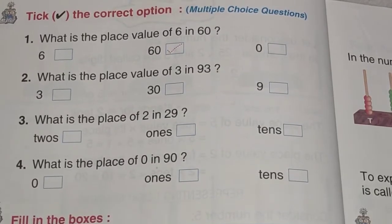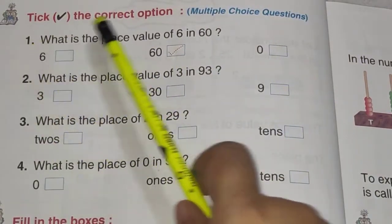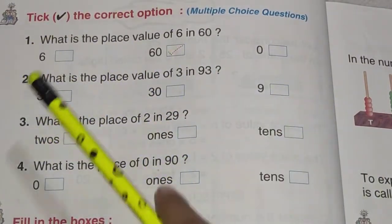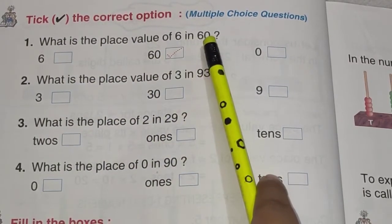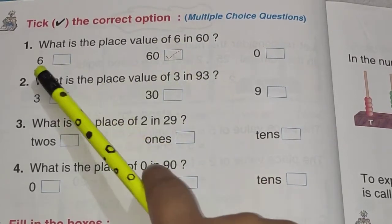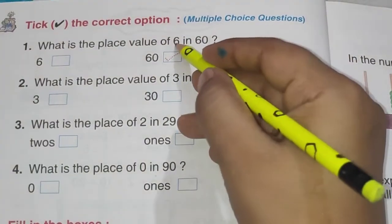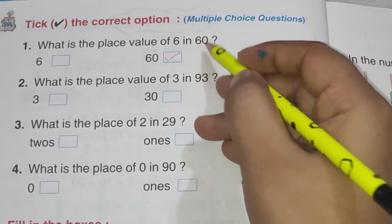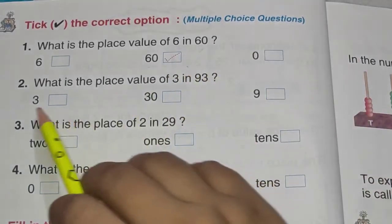Now let's do some questions based on place values. So this one is tick the correct option. Now first question is. What is the place value of 6 in 60? This is a number 60. Aur waha par 6 ki place value kya hai? So this one question is done for you. This is 60. Ab yaha par 6 kis place pe hai? Tens pe hai na? Tens pe hai. So iski value ho jayegi 60.